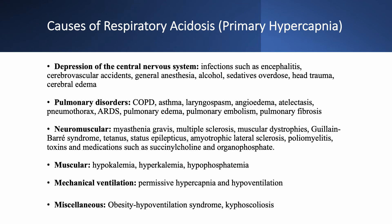More causes of respiratory acidosis include: depression of the central nervous system from infection, CVA, general anesthesia, alcohol, sedatives, overdose, head trauma, or cerebral edema. Pulmonary disorders: COPD, asthma, angioedema, atelectasis, ARDS, pulmonary edema, pulmonary embolism, pulmonary fibrosis. Neuromuscular disorders: multiple sclerosis, myasthenia gravis, muscular dystrophy, Guillain-Barré syndrome, tetanus, status epilepticus, ALS, polio, and toxins/medications such as organophosphates and succinylcholine.